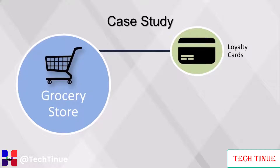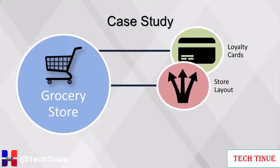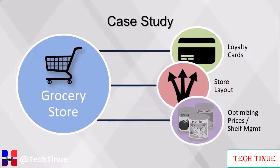By requiring a loyalty card to obtain special discounts in the store, the grocer can isolate habits of each customer and then provide customers with customized promotions to increase spending. When a customer stops frequenting the store, the grocer can mail coupons with aggressive offers. The layout of a grocery store is constantly being changed to maximize customer spending. This is why the milk section is always on the opposite side of the produce section, so customers will have to traverse past every aisle to get to the two most commonly bought items.